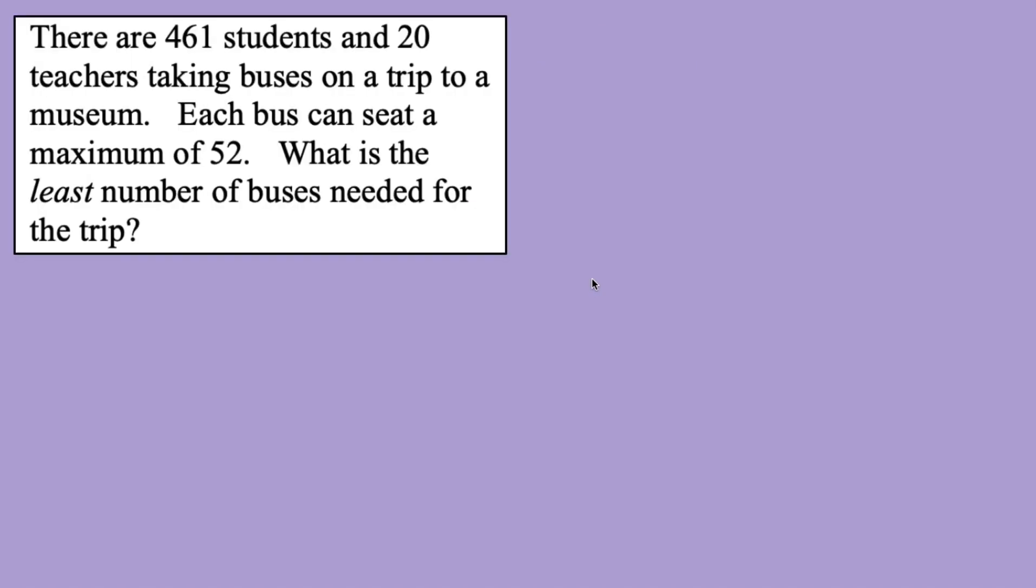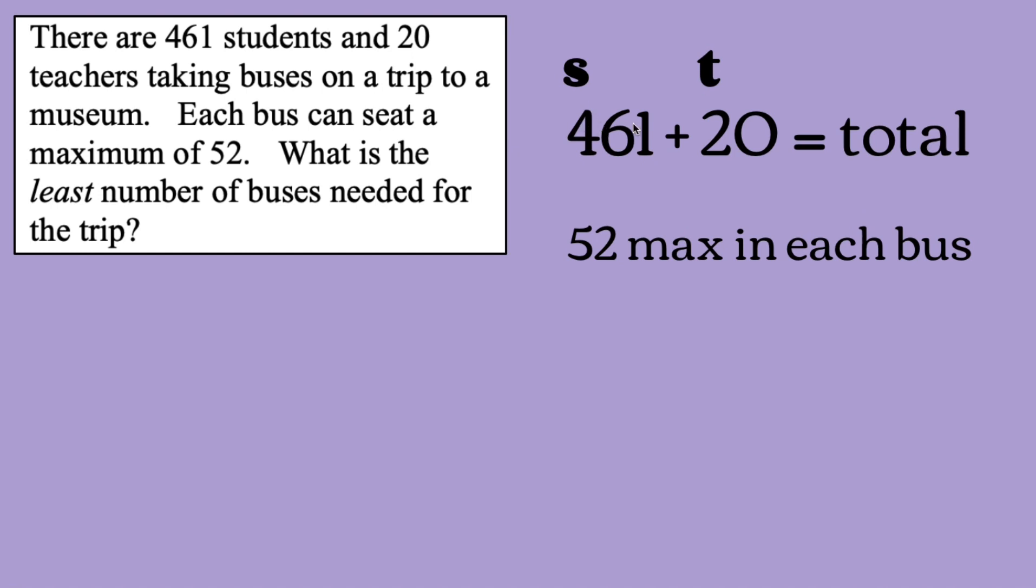Now we're going to go over a word problem, that of inequalities. This one states, there are 461 students and 20 teachers taking buses on a trip to a museum. Each bus can seat a maximum of 52. What is the least number of buses needed for the trip? So here's the information we have: 461 students and 20 teachers. If we add that up, we'll get the total number of people. And there are 52 people max, a maximum of 52 people in each bus. So once we turn this into an inequality, first of all, let's give ourselves a variable. So we have B for the number of buses, the total number of buses needed.